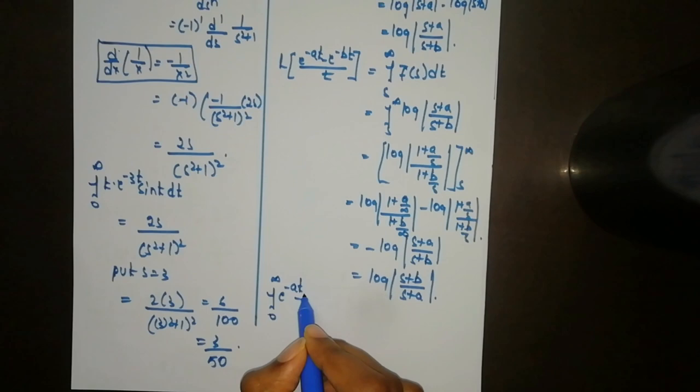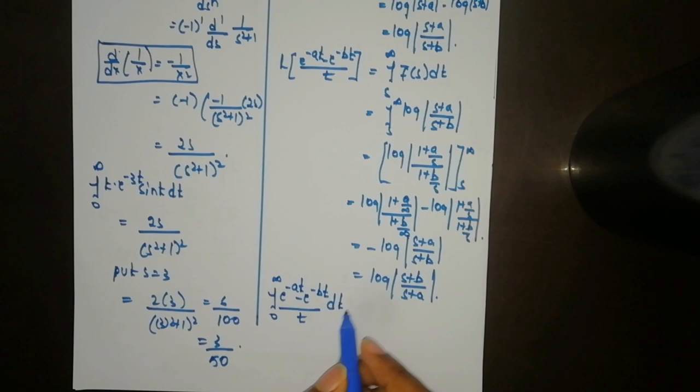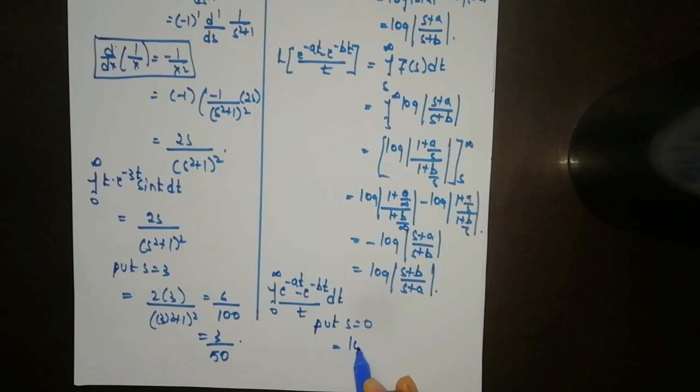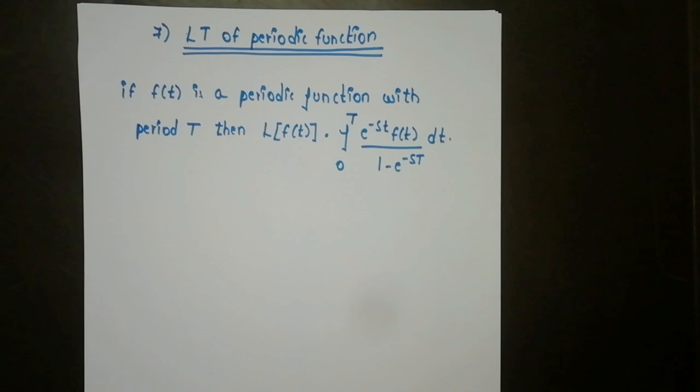The question is ∫_0^∞ (e^(−at) − e^(−bt))/t dt. Here s value is not given, so put s=0. Then the answer is log(b/a).